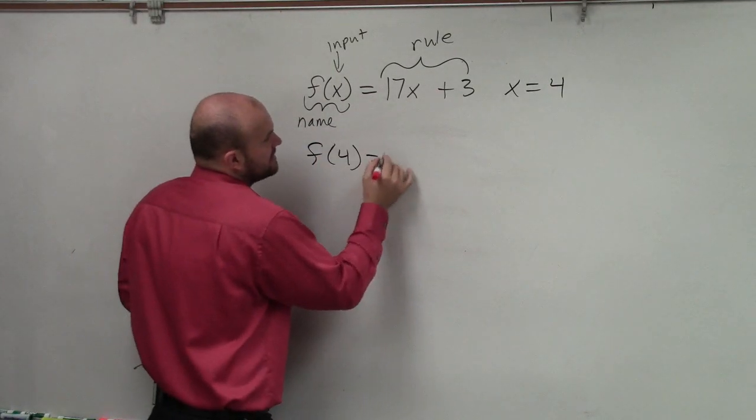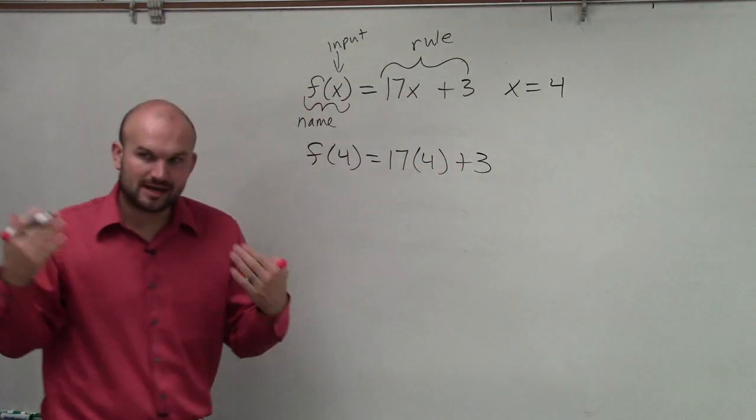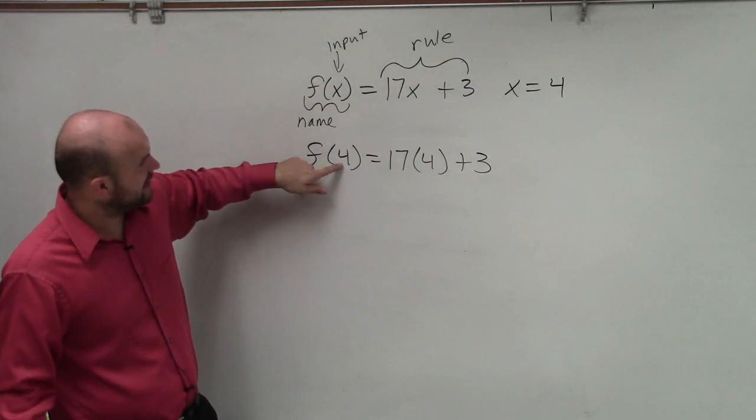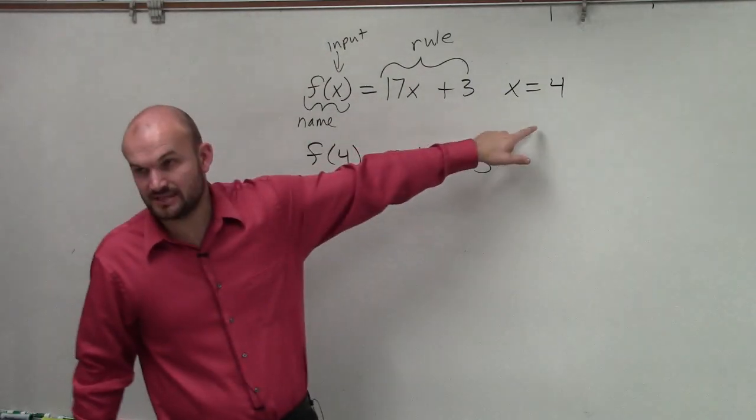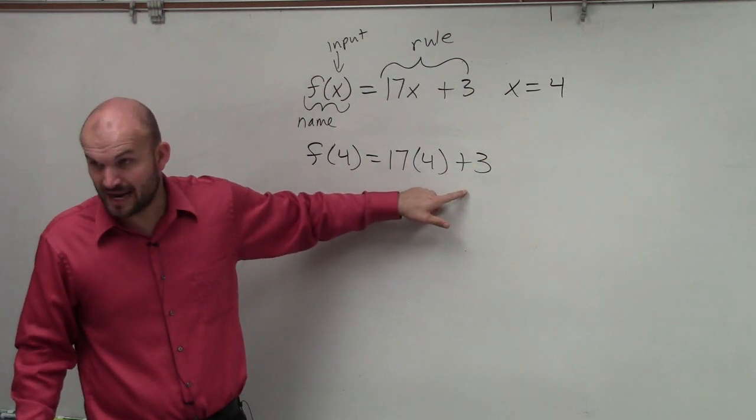So f of 4 is equal to 17 times 4 plus 3. So what I am saying is my function rule, my input value has now been turned to 4 because that's what it tells me to. And now, I plug my input value into my rule to find my output.